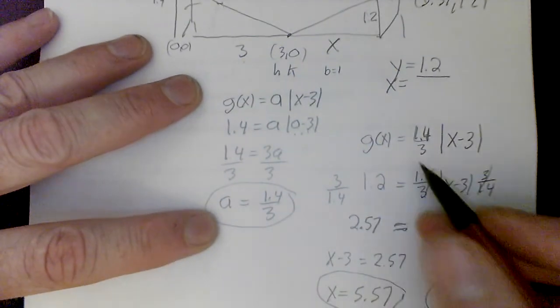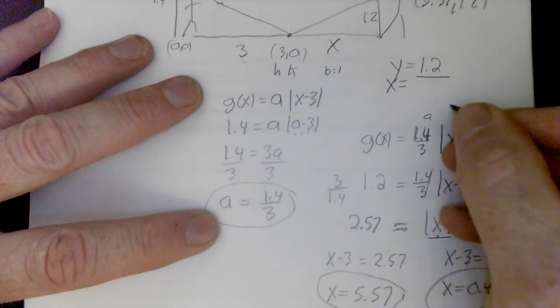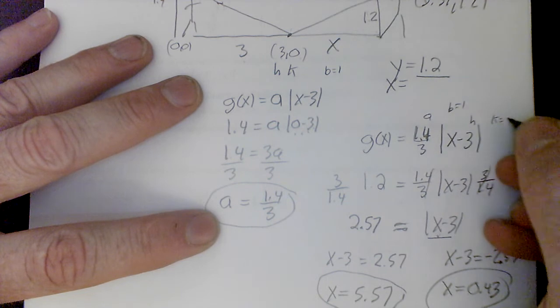So the equation was g(x) equals 1.4/3 times |x - 3|. Once again, this is my a value. We know b equals 1. This was my h value, and k was 0.